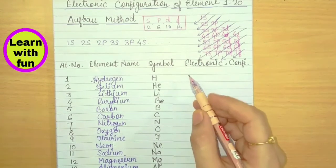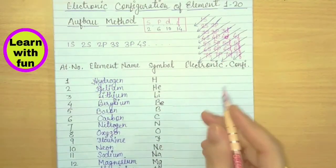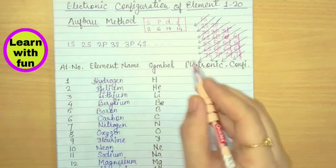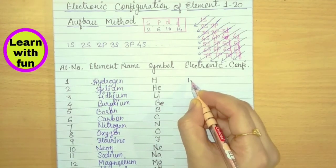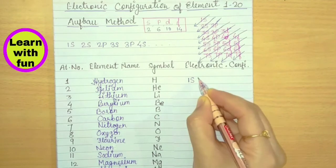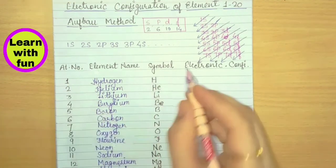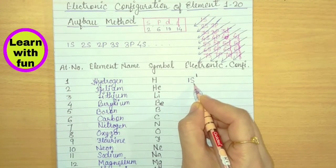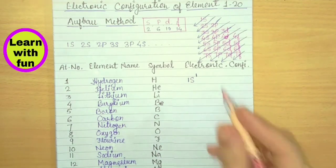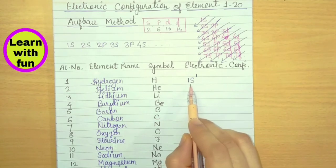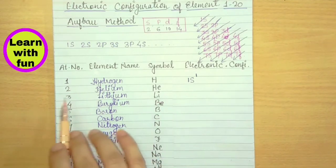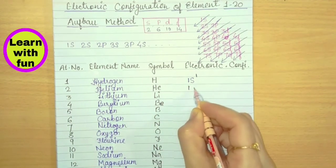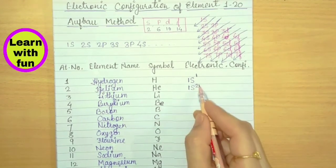Let's write the electronic configuration of hydrogen using this formula. Hydrogen has 1 electron, and that 1 electron goes into the first subshell: 1S1. The number 1 is the shell, S is the subshell, and 1 is the number of electrons. This is the lowest energy level subshell. Helium has 2 electrons, so the configuration is 1S2.